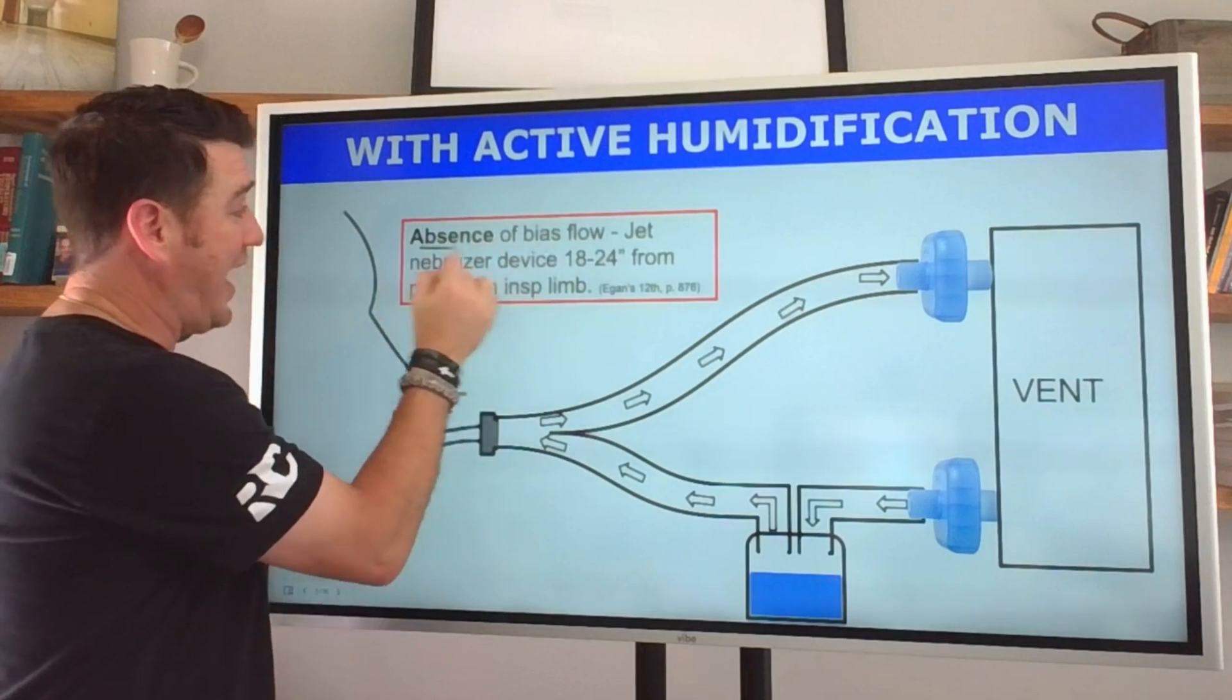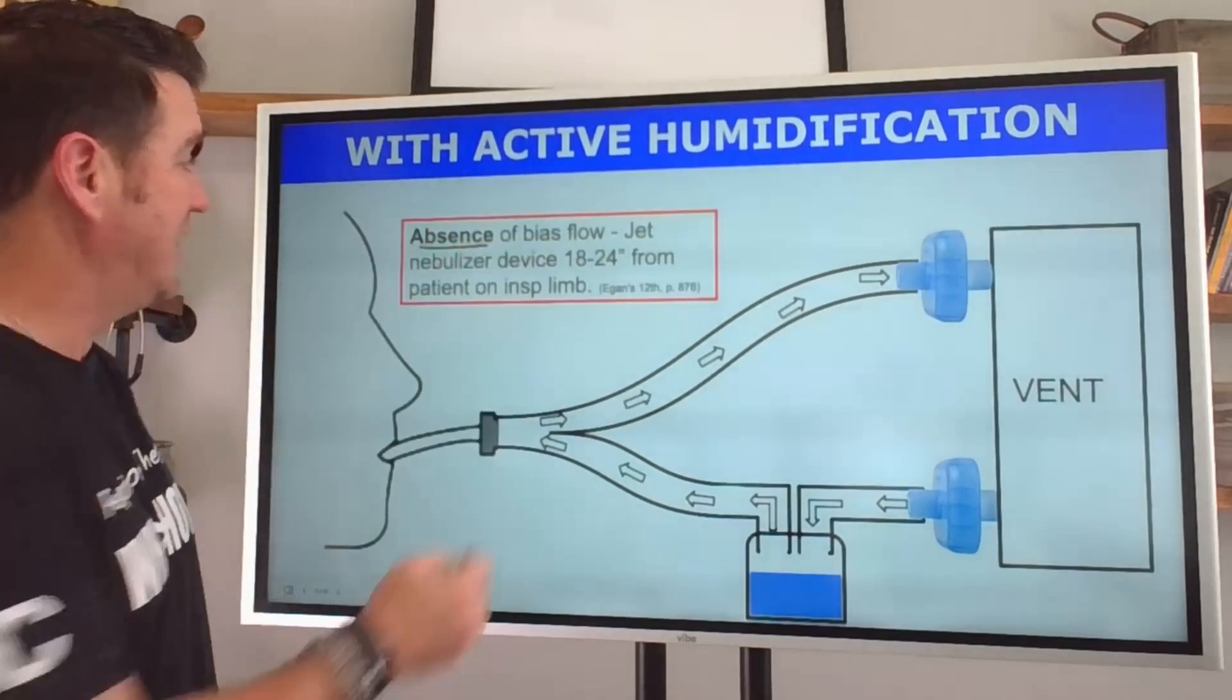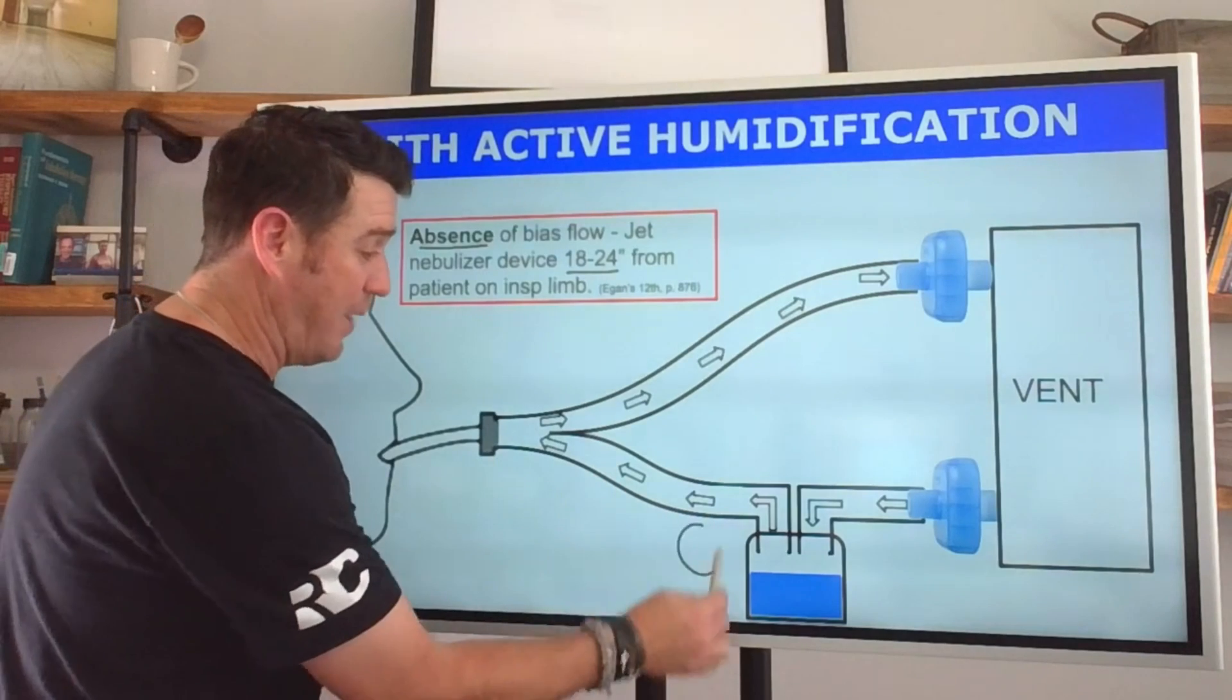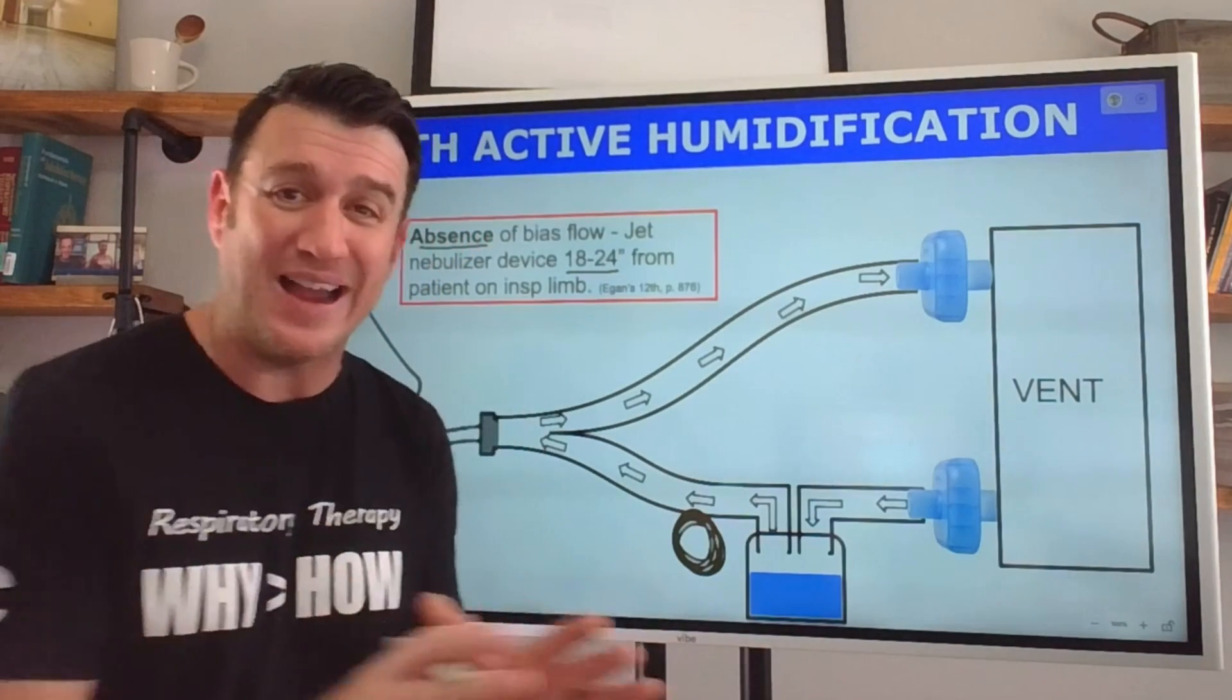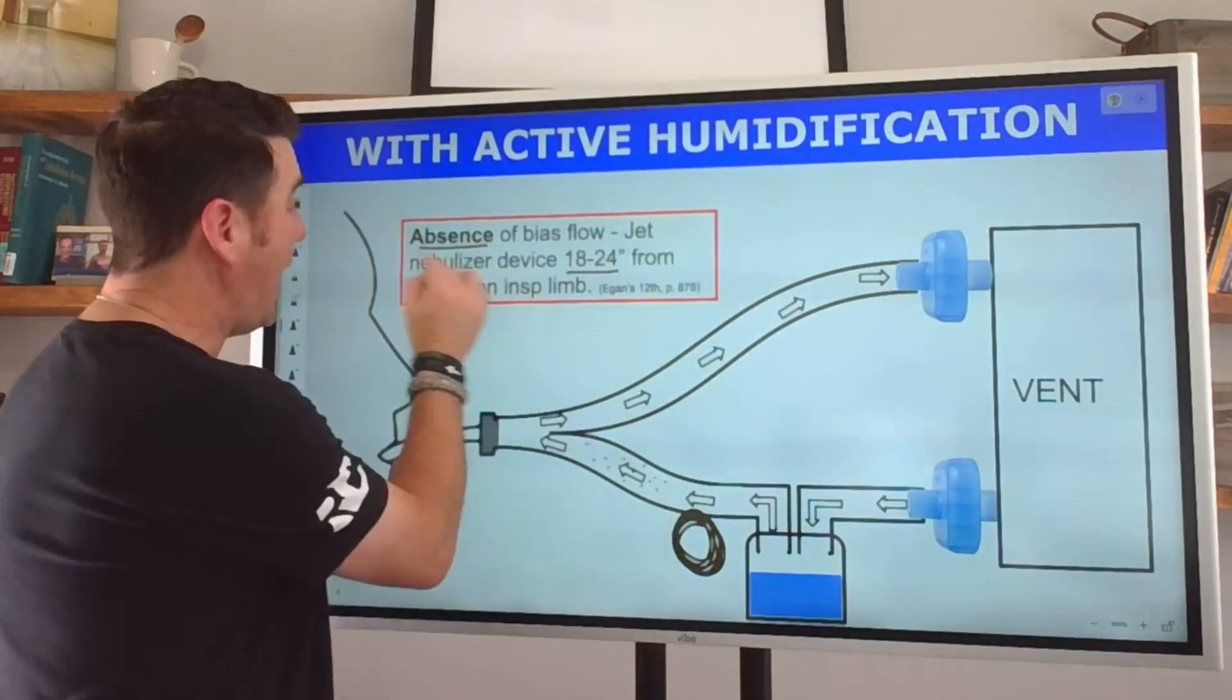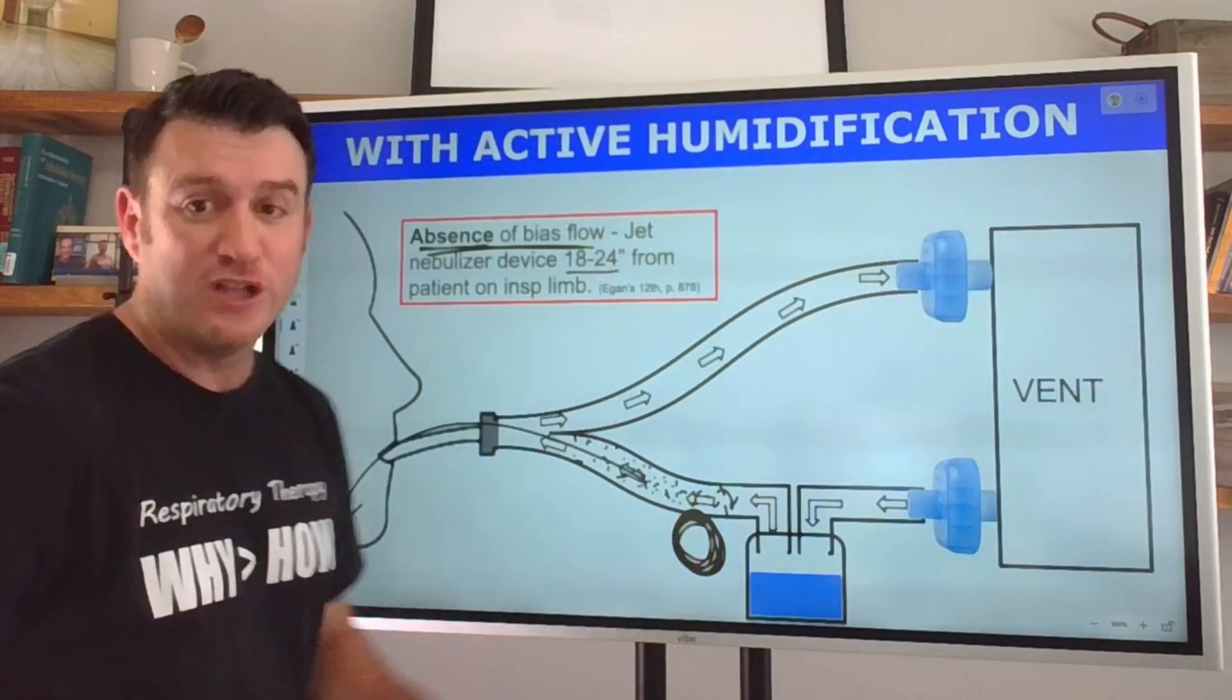Here's where it starts with a ventilator without bias flow. Question number one: does my ventilator operate off of a bias flow or not? If it does not, then jet nebulizer devices should be 18 to 24 inches from the patient on the inspiratory limb. When you have a bias flow or constant flow running through the circuit, any aerosol that gathers in here is going to be cleared out by that bias flow. In the absence of bias flow, as this jet nebulizer is generating aerosol particles they are gathering in this circuit and upon inspiration they are delivered to the patient.